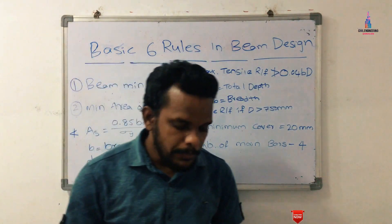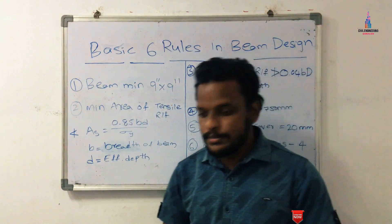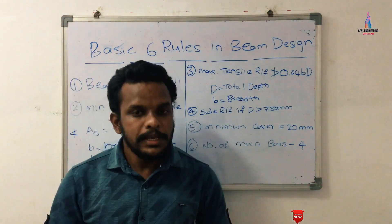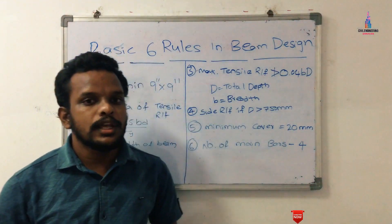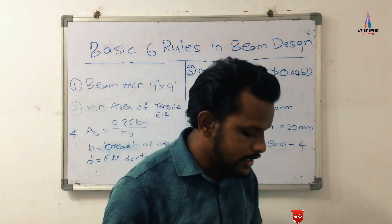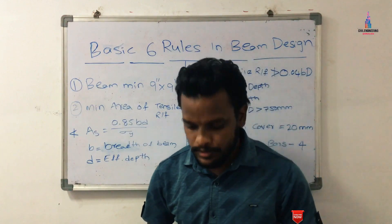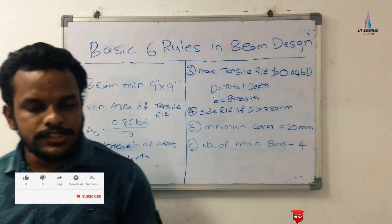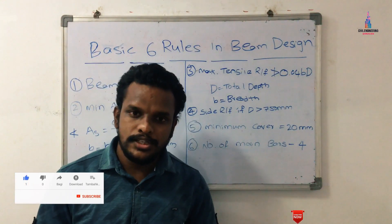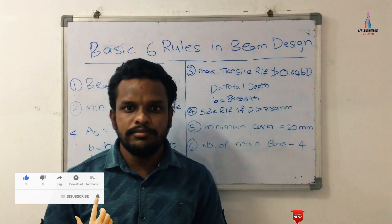Basically, a beam is a horizontal member supported by vertical structural members called columns. Beams are used to transfer loads from the slab section to the column section — that is the main purpose of a beam. Beams are classified into three categories: plinth beam sections, main beam sections, and secondary beam sections.